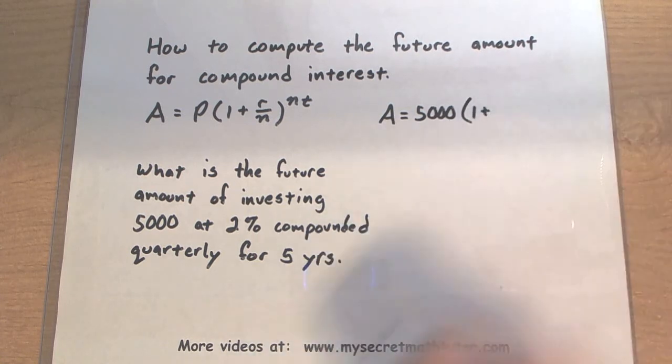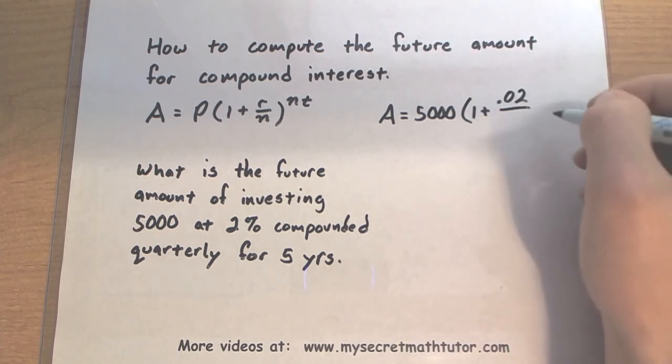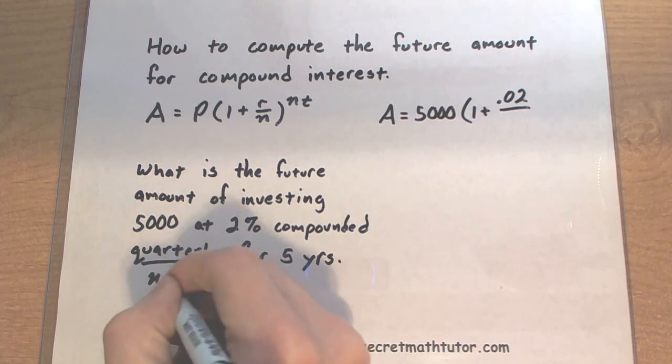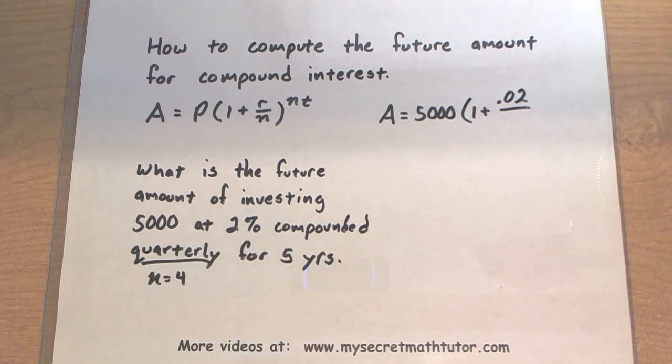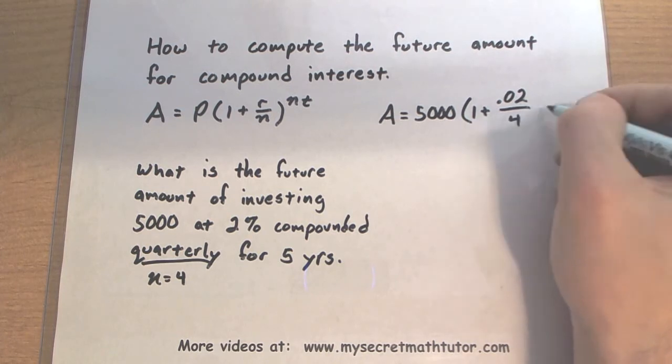My rate is 2%. Make sure you write that as a decimal. This says it's compounded quarterly. That means four times a year the interest is compounded. Let's put that on the bottom.